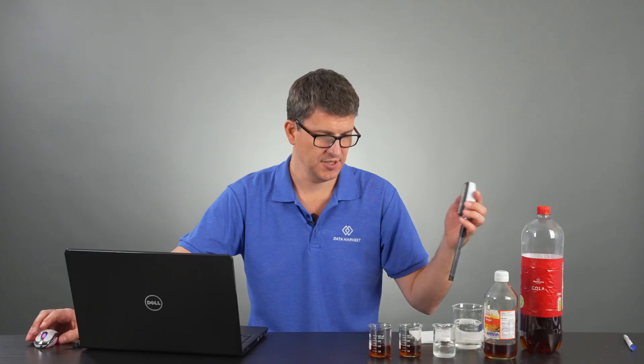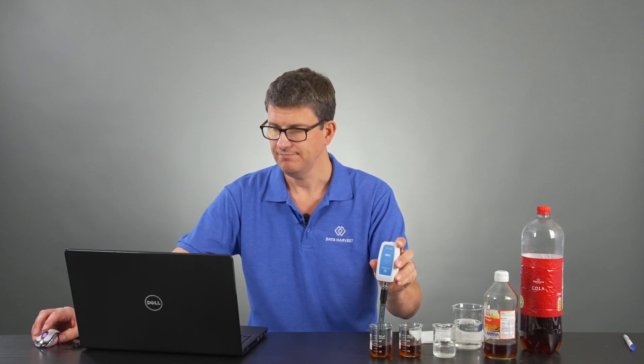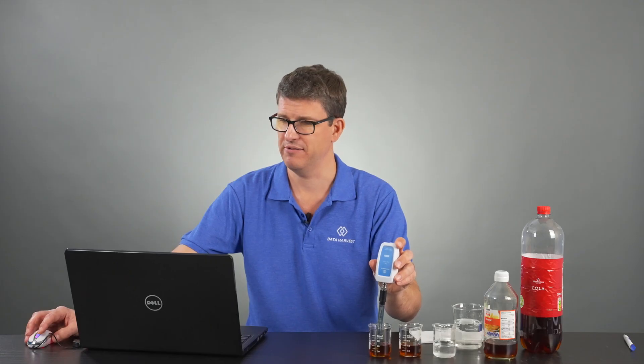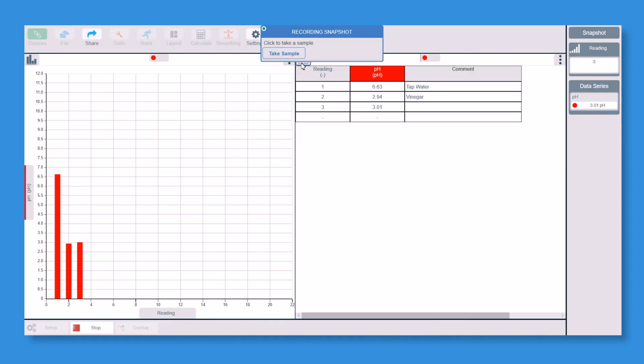And the last one we're going to do is Coca-Cola. So we now pop this in here. You notice I'm not clicking stop. It's running continuous because I can take as many snapshot samples as I like now. Now would you believe the Coca-Cola is pretty much the same as the vinegar? That's rather worrying isn't it? So we now take a sample, put that there and we're going to type in here Cola.